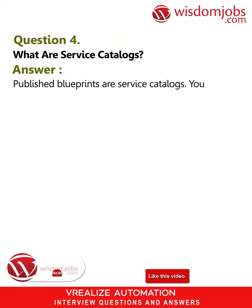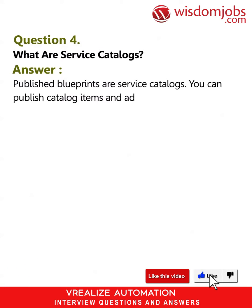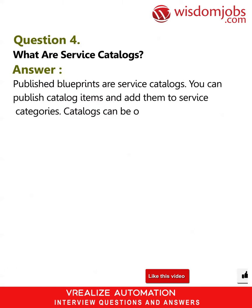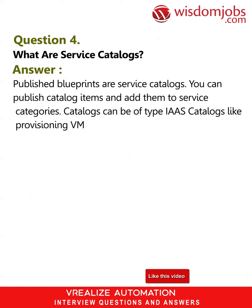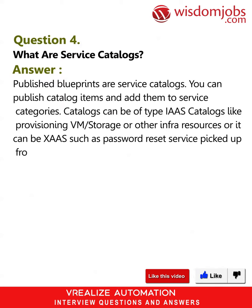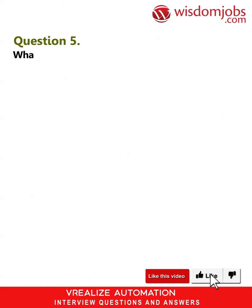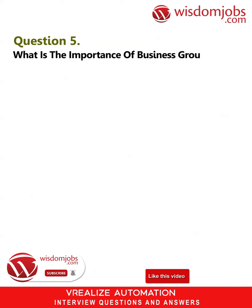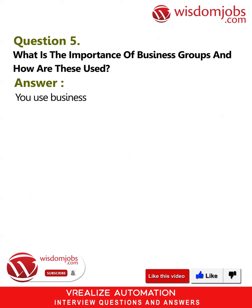Question 4: What are service catalogs? Answer: Published blueprints are service catalogs. You can publish catalog items and add them to service categories. Catalogs can be of type IaaS catalogs like provisioning VM, storage, or other infrastructure resources, or it can be XaaS such as a password reset service picked up from VRO workflows.